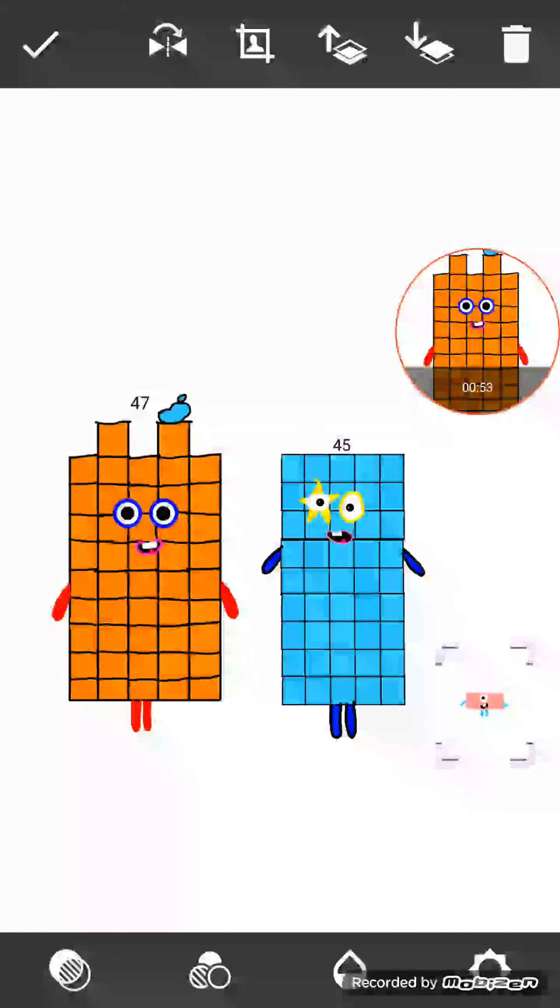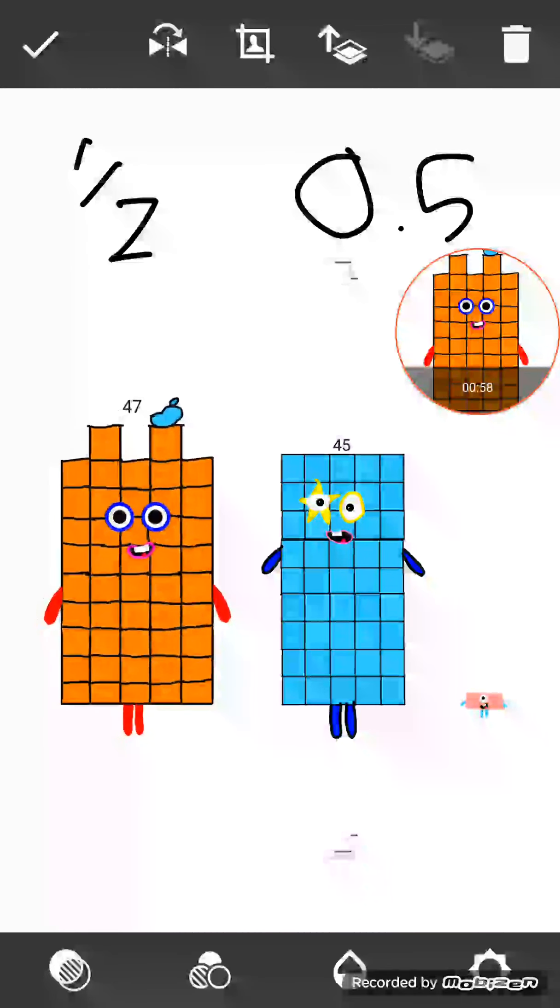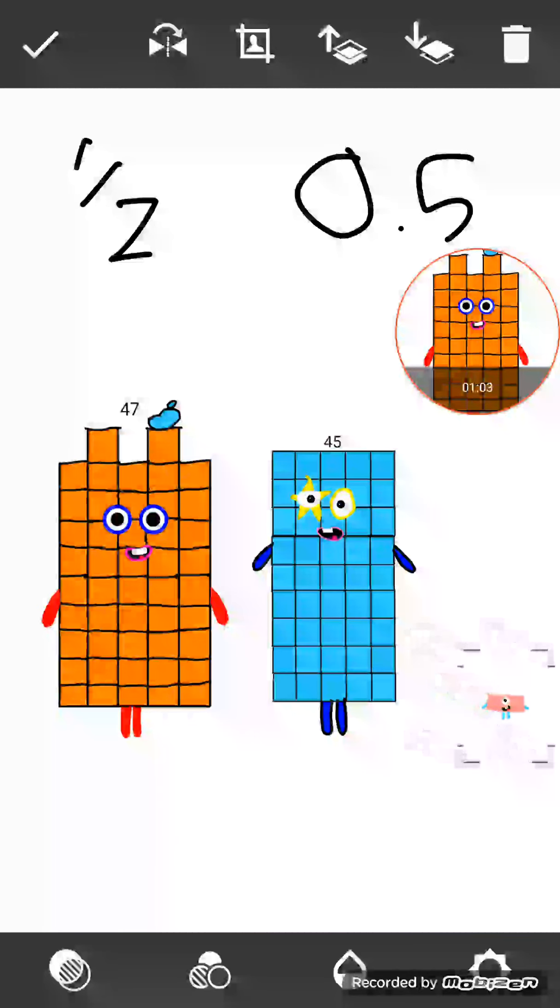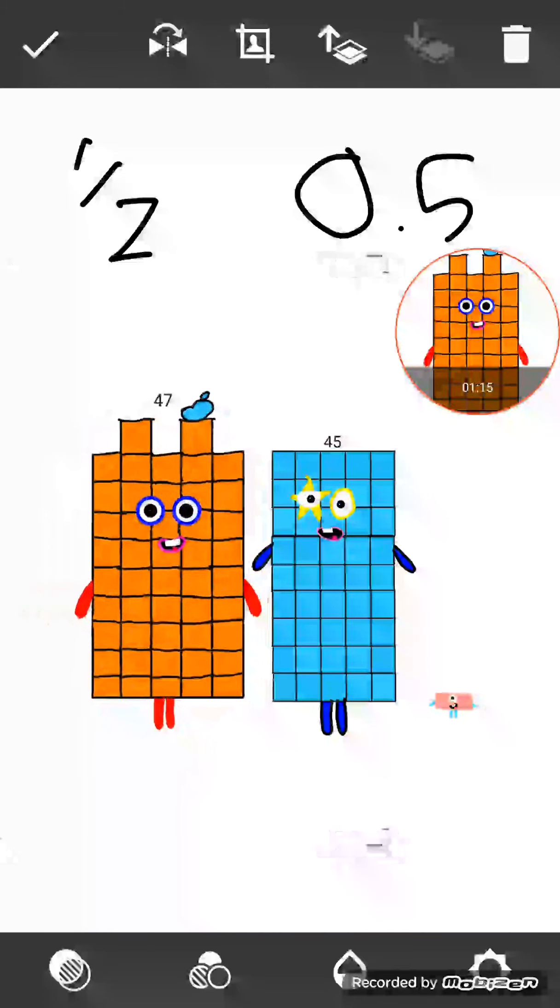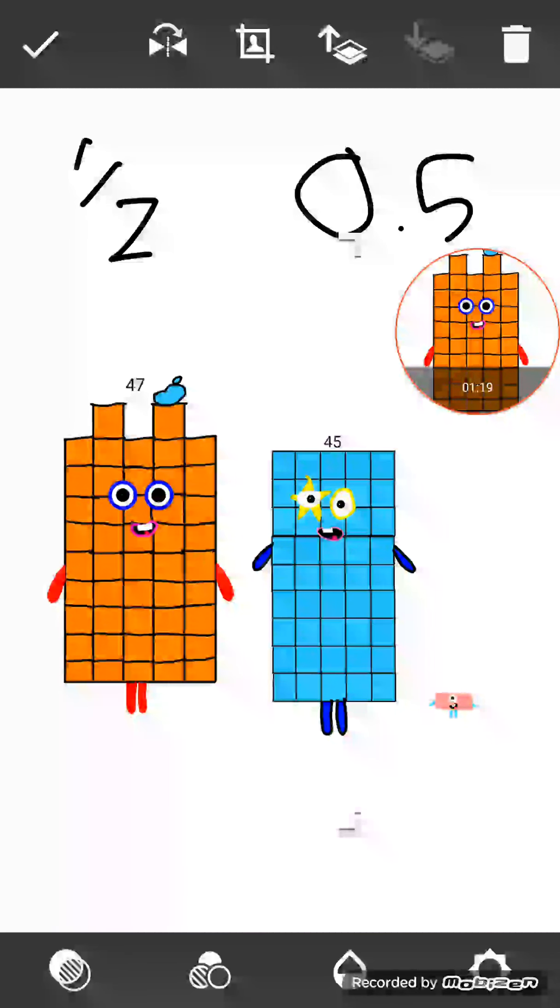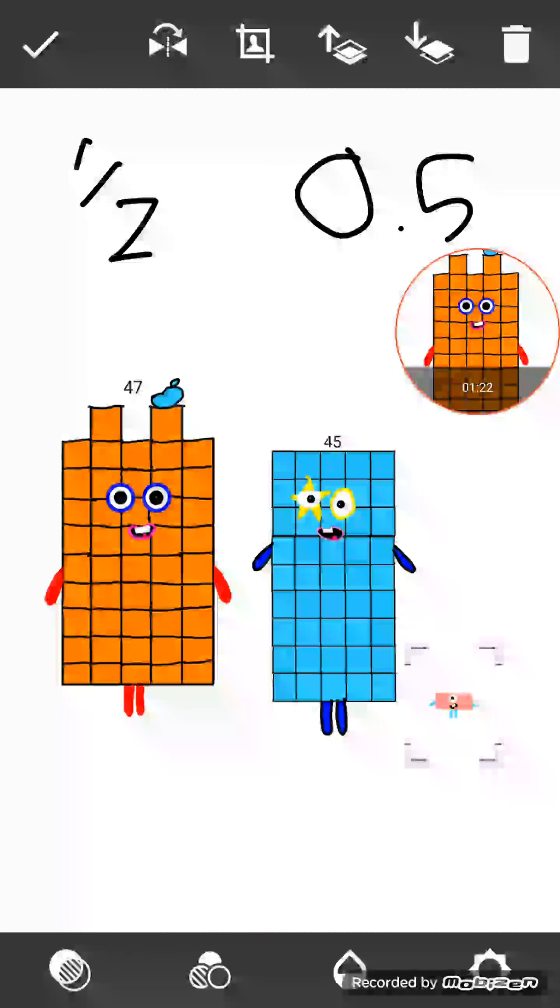Sure thing. Do you see these symbols? Yeah. Well, it's not just any symbols. This is a half, and this is 0.5—the same value. Yeah, well done. You did the first one.